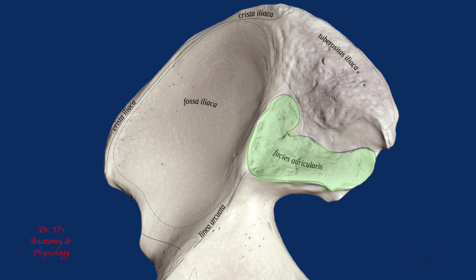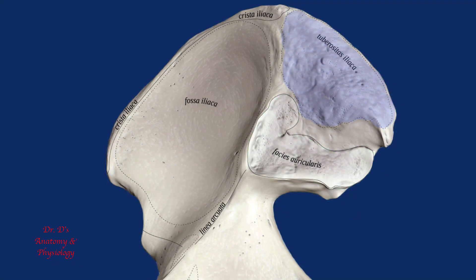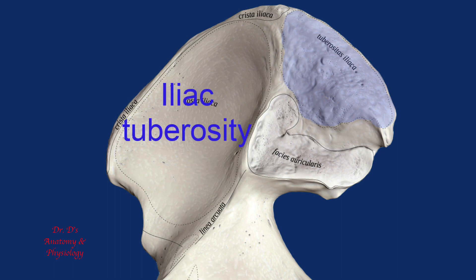Posteriorly, there is a joint or articulation between the ilium and sacrum of the spine — the sacroiliac joint. This surface has a resemblance to an ear, and for this reason it is called the auricular surface. Auricular is an adjective that means like an ear. The joint between the ilium needs to be strong and stable, achieved by connective tissue that attaches to the bone. This attachment is evidenced by the roughened surface called a tuberosity — specifically, the iliac tuberosity.